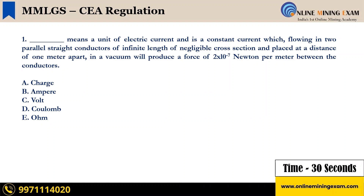The first question: dash means a unit of electric current and is a constant current which, flowing into parallel state conductors of infinite length of negligible cross section and placed at a distance of 1 meter apart in a vacuum, will produce a force of 2 into 10 power minus 7 Newton per meter between the conductors. The options are: A) Charge, B) Ampere, C) Volt, D) Coulomb, and E) Ohm. Your time starts now.